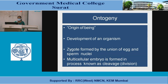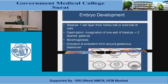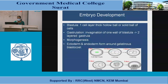Ontogeny refers to the origin and development of an organism. A zygote is formed by the union of egg and sperm nuclei. A multicellular embryo is formed in a process known as cleavage or division. The blastula is a one-cell-layer thick hollow ball or solid ball of cells.